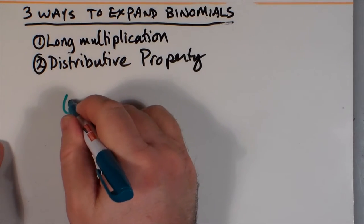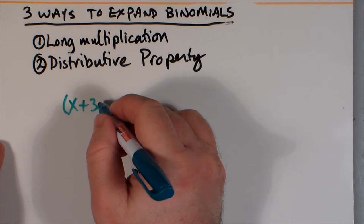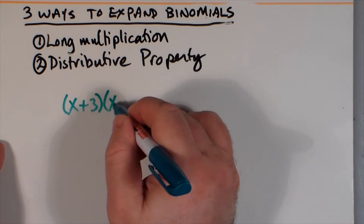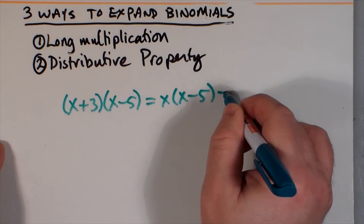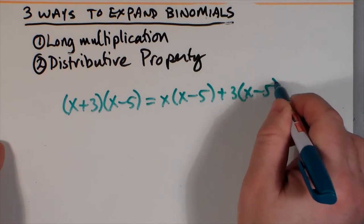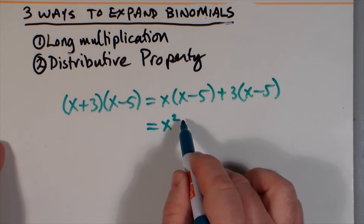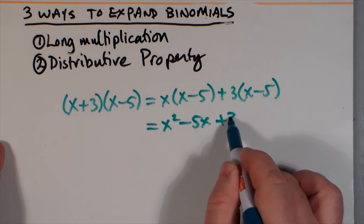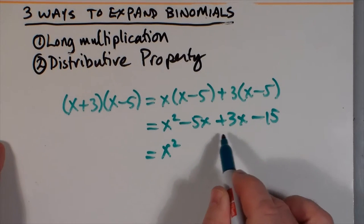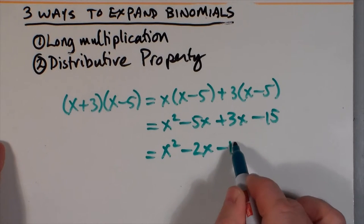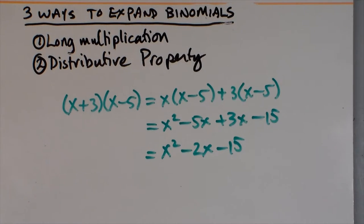Then there's one that we do a lot in class, and it's the distributive property. The distributive property is just a way of multiplying two binomials — like multiplying 3 times x plus 5. But this time, if we do x plus 3 times x minus 5, we multiply x times x minus 5, and we add it to 3 times x minus 5. We do a full expansion using the distributive property, then remember to add the negative 5x to the positive 3x, and you get x-squared minus 2x minus 15 after you simplify. Which is the same answer we got using long multiplication.